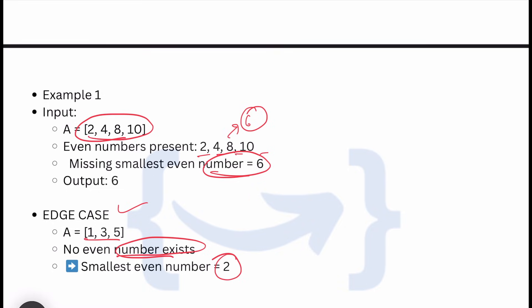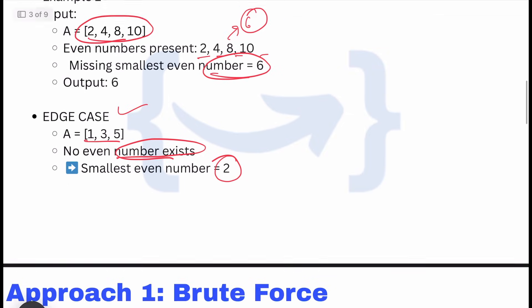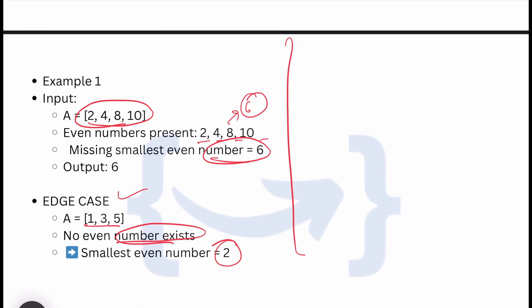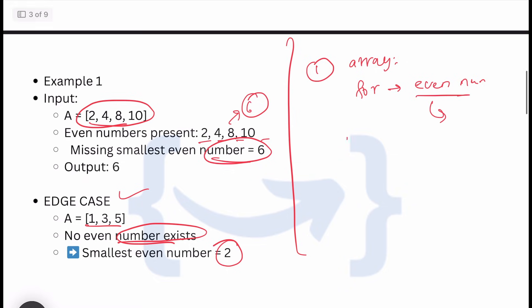From this, a few approaches came to mind. First, we can do a brute force search with a for loop responsible for calculating even numbers like 2, 4, 6, 8, 10, and for each number we'll find whether it exists using dot find or multiple STL operations.